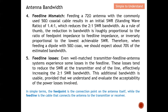As a rule of thumb, the reduction in bandwidth is roughly proportional to the ratio of feed point to feed line impedance, or inversely proportional to the lowest achievable SWR. The SWR needs to be as small as possible. For this case, 50 divided by 72 means you can expect about 70% of the estimated bandwidth.